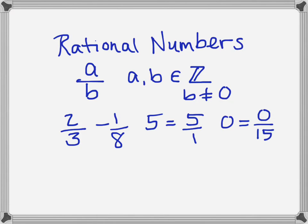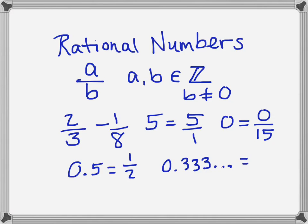We also talk about decimals. For example, 0.5 is a rational number because we know that 0.5 can be rewritten as one-half. Things like 0.333 repeating — that's a rational number because that is the decimal we use to represent one-third.